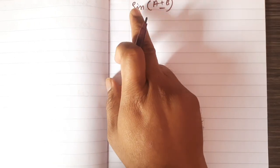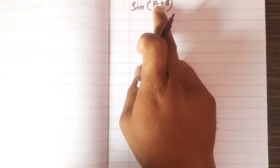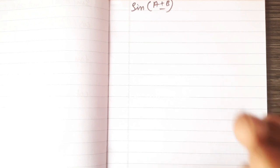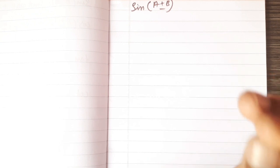Today's formula is sin(A+B) or sin(A−B). We will explain the formula very simply. If you like it, please like, chain subscribe. In the next video, we will explain the sums.